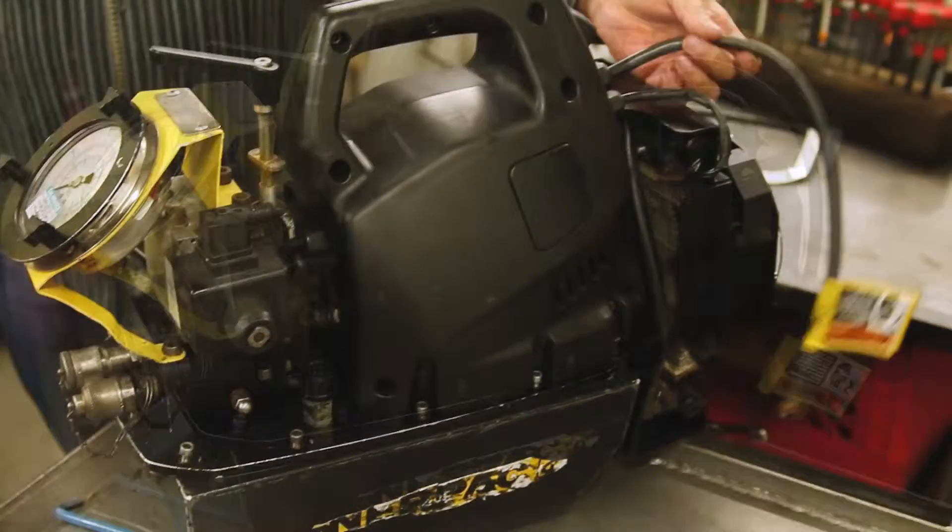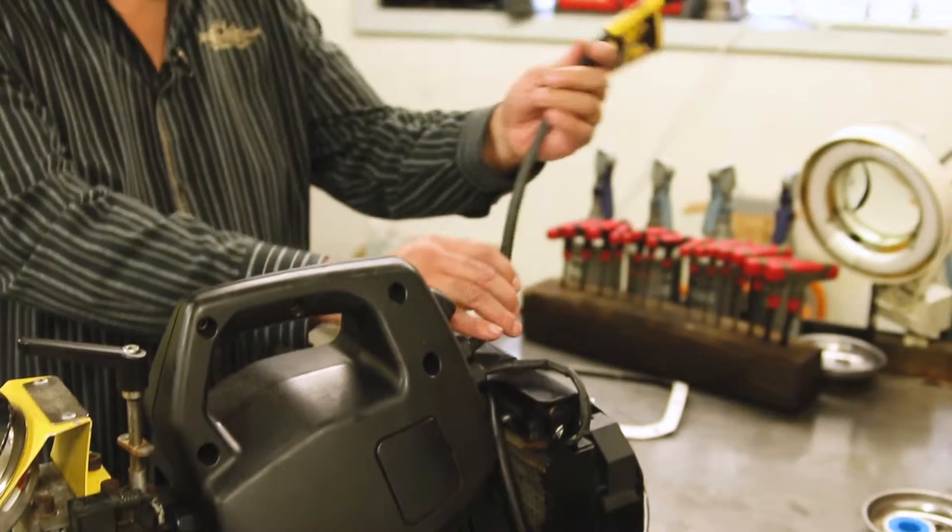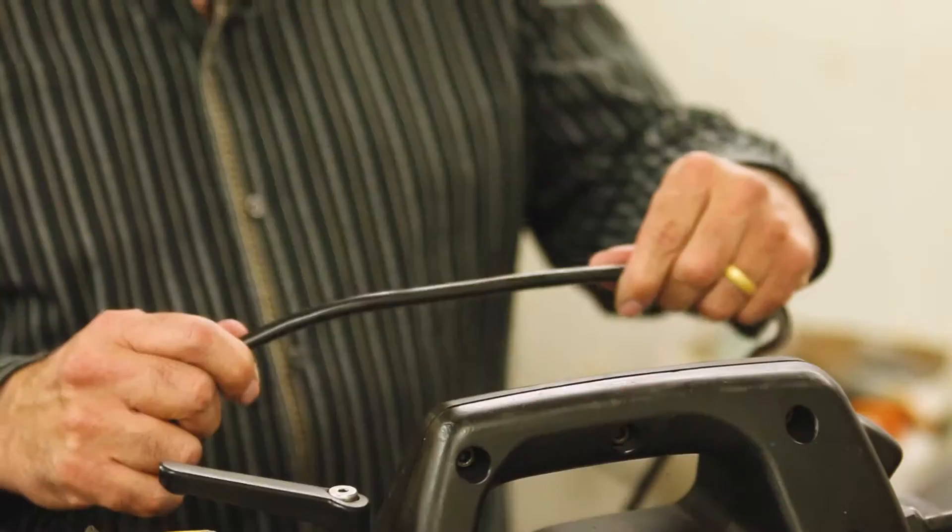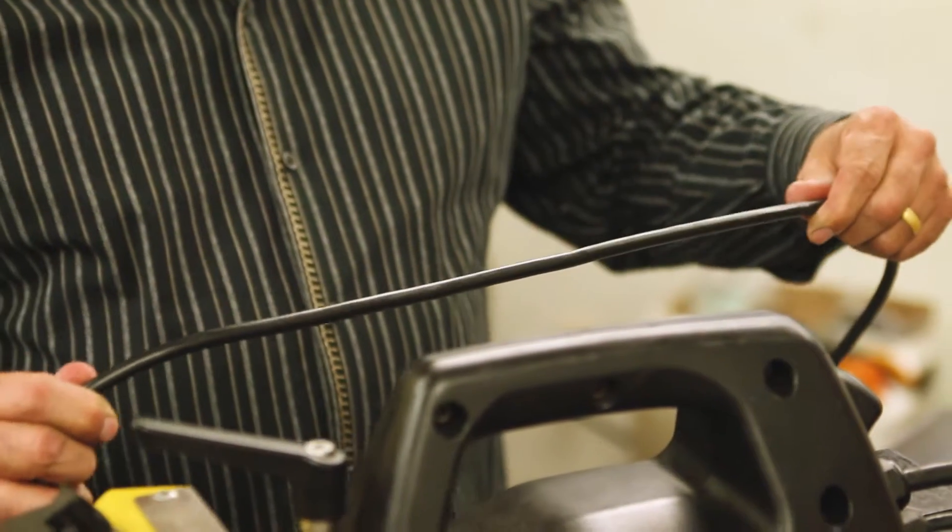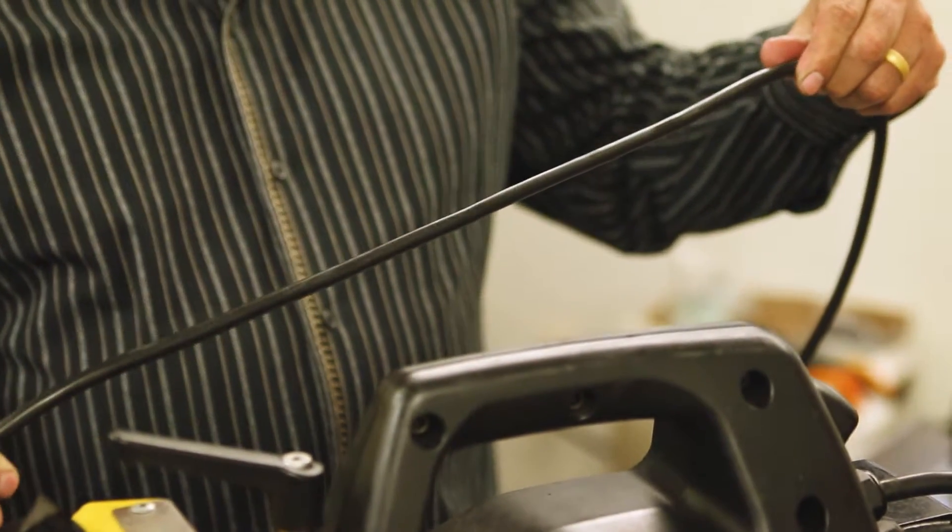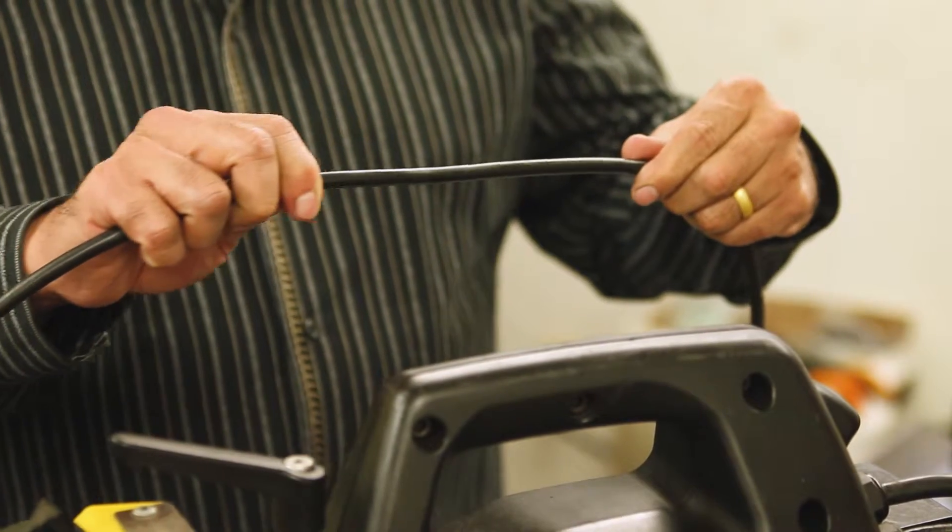First of all, visually inspect the power cord for nicks, abrasions, broken plug, and overall condition. Replace it if necessary. Visually inspect the pendant remote cord for nicks, abrasions, and overall condition, and again replace it if necessary.